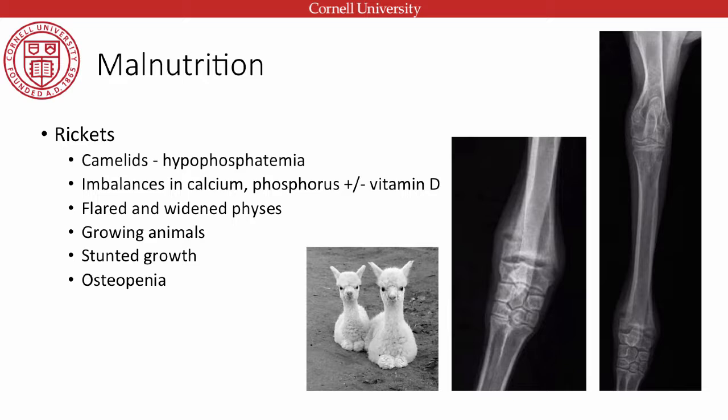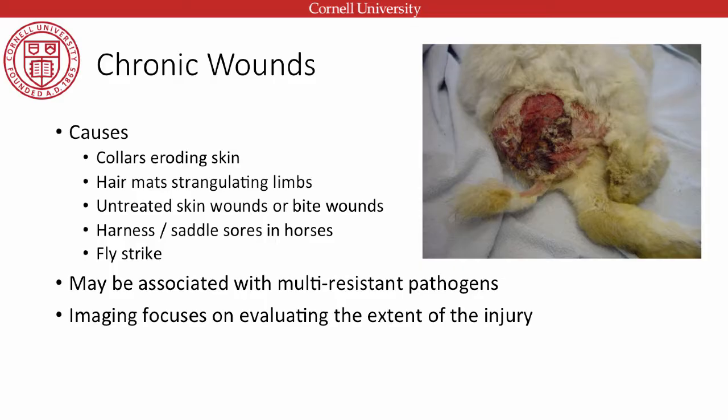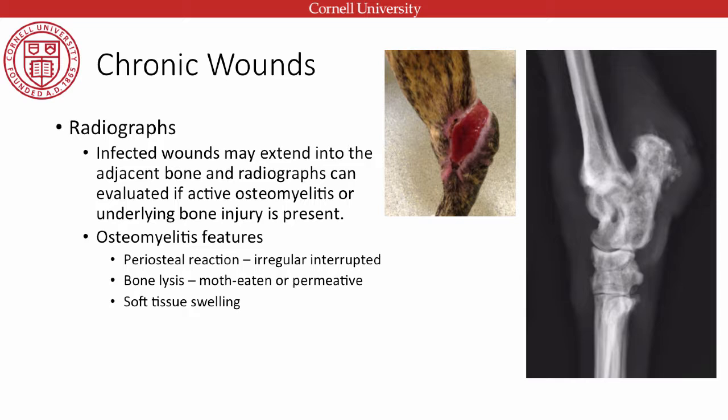Moving on to chronic wounds. We see these regularly in animals with collars that have eroded the skin, hair mats that strangulate parts of limbs, untreated skin or bite wounds, harness or saddle sores particularly in horses, and fly strike. These may be associated with multi-resistant pathogens. When imaging, we focus on the extent of the injury — whether there is underlying osseous involvement and how far the wound tracks — as this is important for determining treatment response. Radiographs can evaluate if there is active osteomyelitis in the underlying bone.